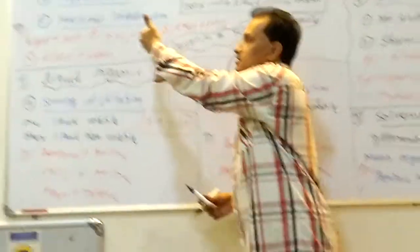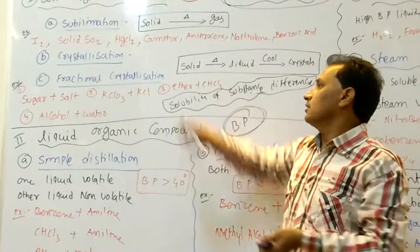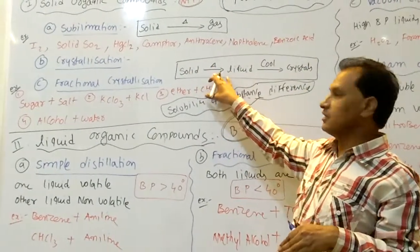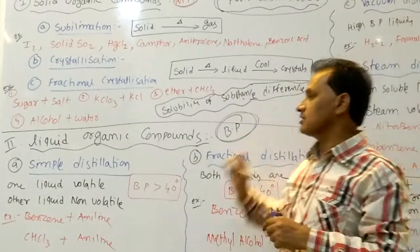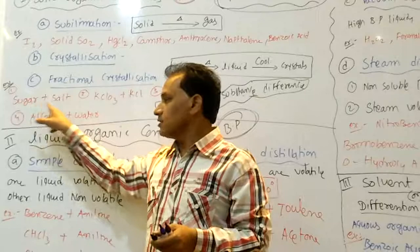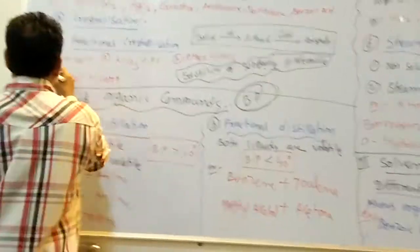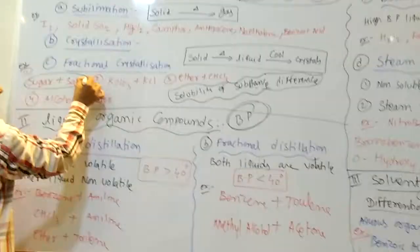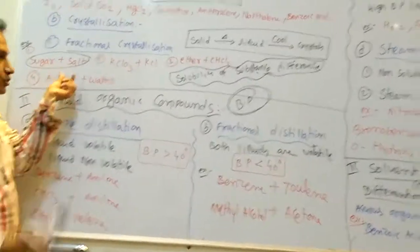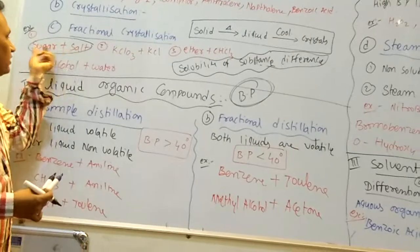In crystallization, the process is repeated and is known as fractional crystallization. We take solids, heat them to form liquid, cool the liquid, and they again form crystals. For example, sugar and salt — both are mixed and separated by adding ethyl alcohol. In ethyl alcohol, sugar is completely soluble and salt is not soluble. On the basis of this difference in solubility, they are purified.